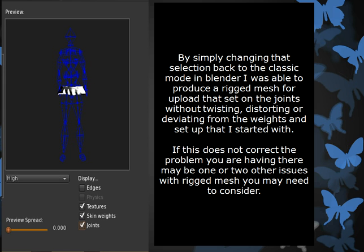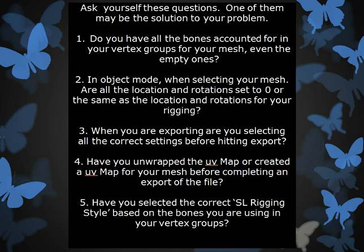If this does not correct your problem, you have a couple of other things that you can look at — other issues that you might want to consider that may be causing your problems. Ask yourself these questions. One of them might be the solution to your problem. Do you have all of the bones accounted for in your vertex groups for your mesh, even the ones that are empty?